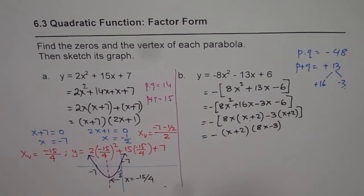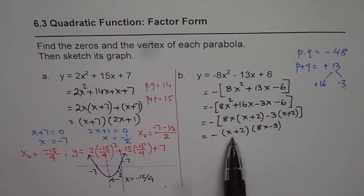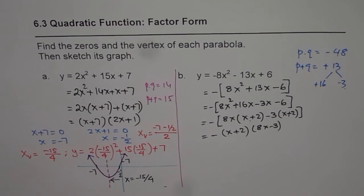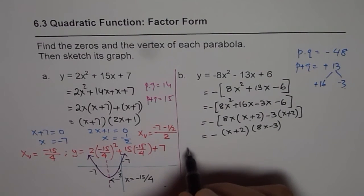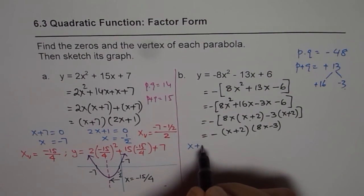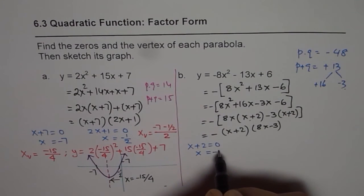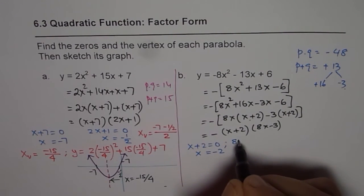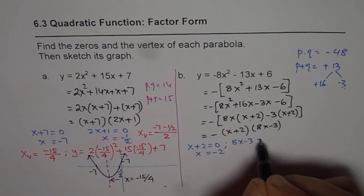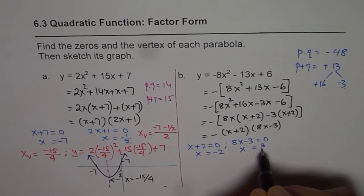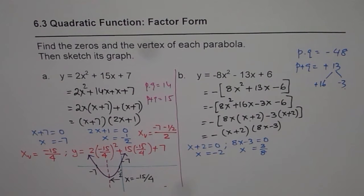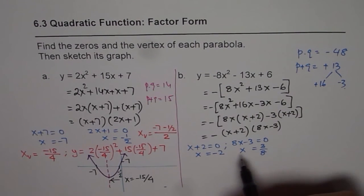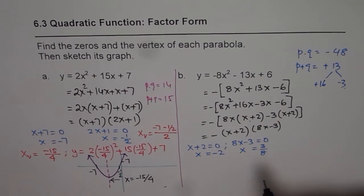Dropping the square brackets, the factored form is negative (x + 2)(8x - 3). Setting x plus 2 equals zero gives x = -2, and setting 8x minus 3 equals zero gives x = 3/8. These are the two x-intercepts, one on the negative side and one on the positive side.